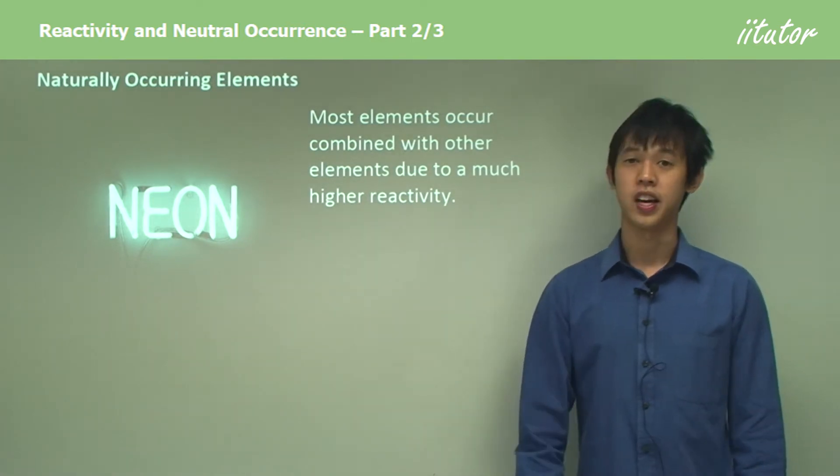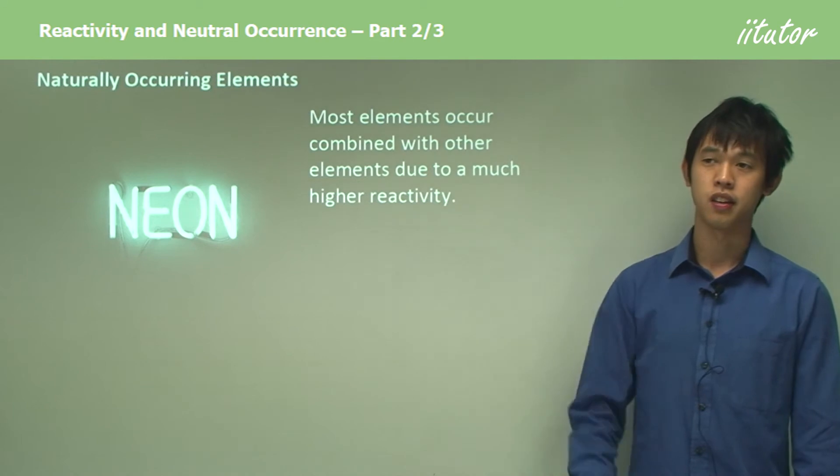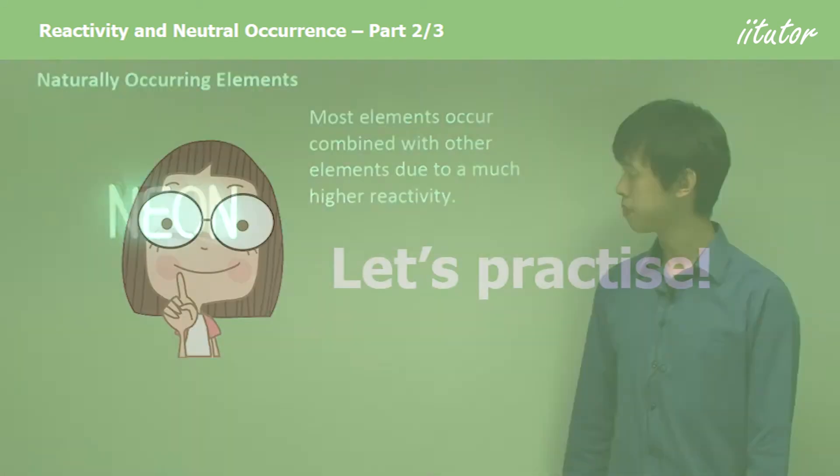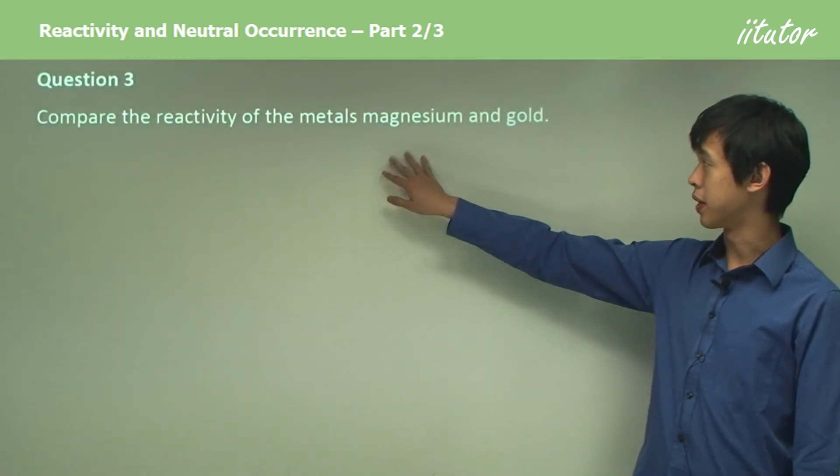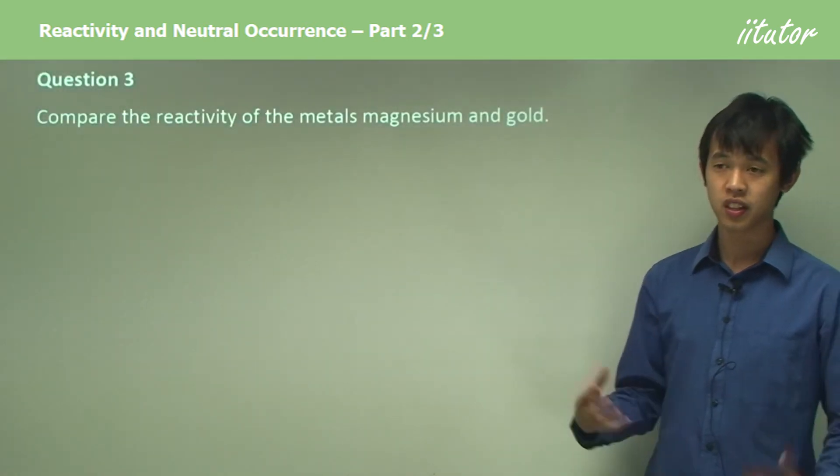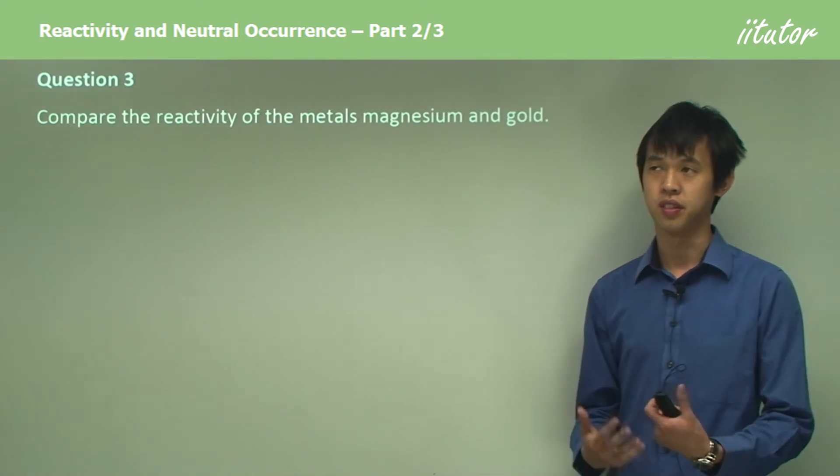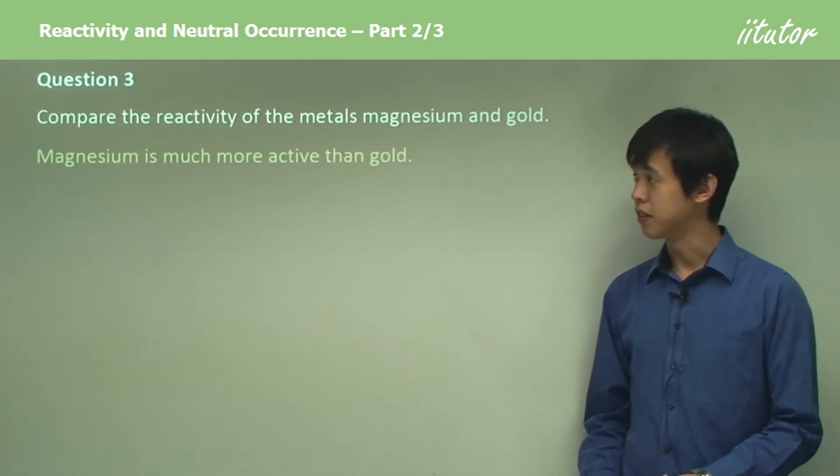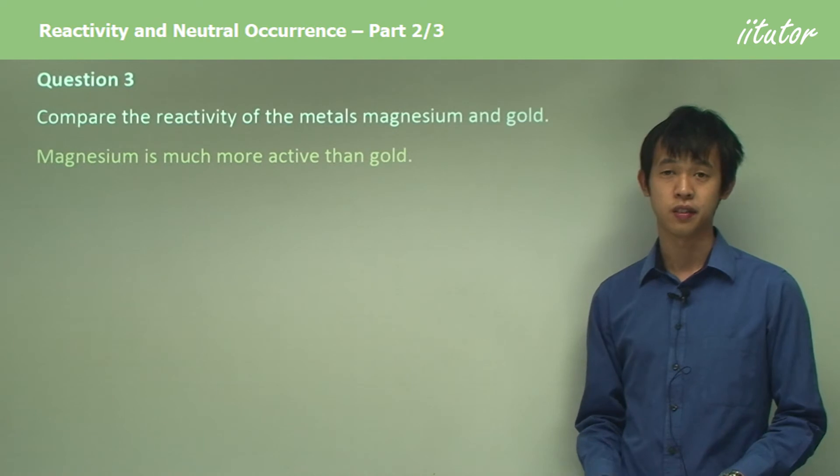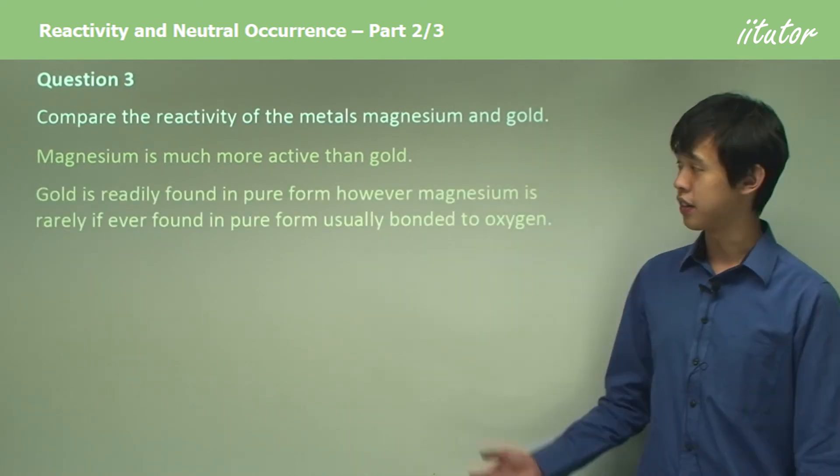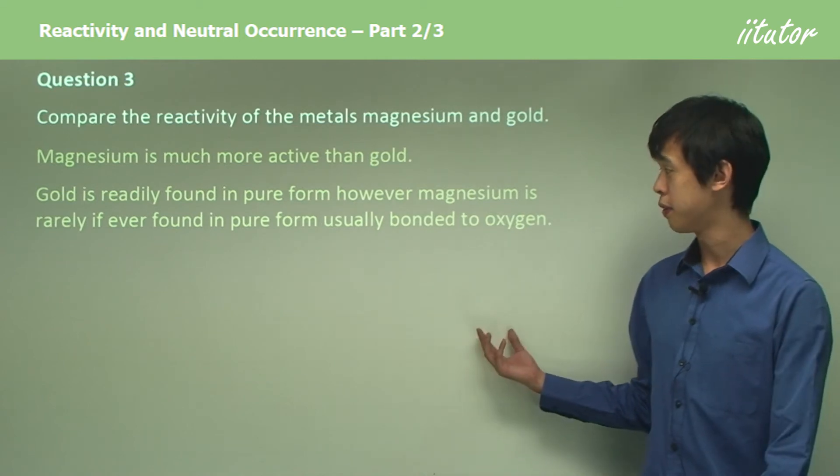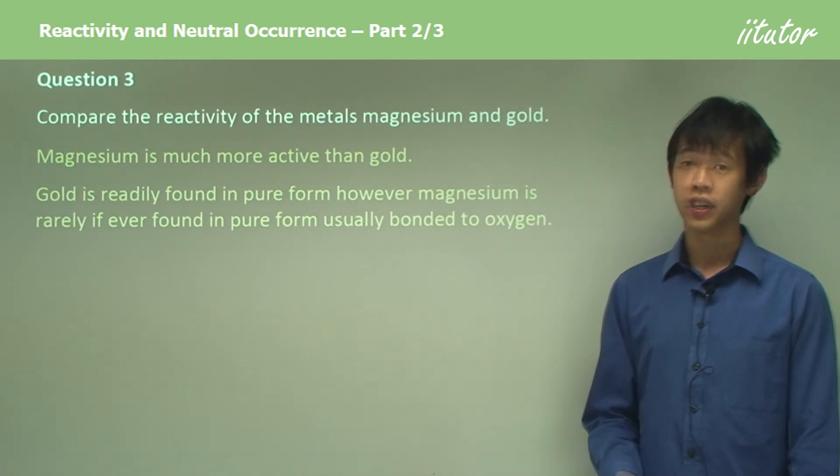Compare the reactivity of the metals magnesium and gold. If we look at the reactivity of these two, we should instantly know that they're very different. Magnesium is a much more active metal than gold. The reason is because gold we can find readily in pure form. However, magnesium is rarely if ever found in pure form on the earth's surface.